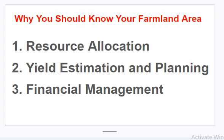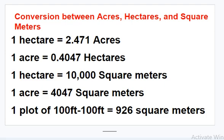Let me show you how this land is measured. Conversion between acres, hectares, and square meters: one hectare is equal to 2.471 acres. One acre is 0.404 hectares. One hectare is close to 10,000 square meters. One acre equals approximately 4,047 square meters.